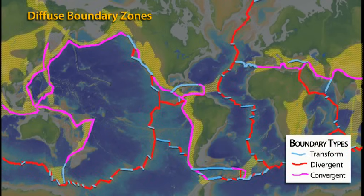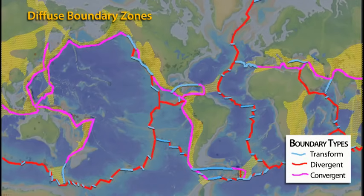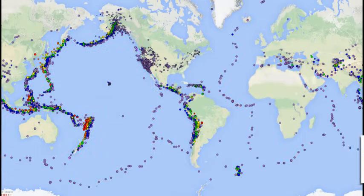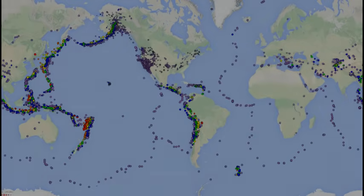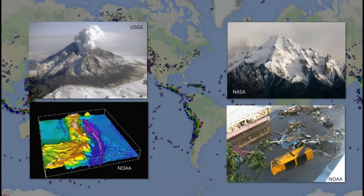In addition to these three boundaries, there are also diffuse boundary zones in which deformation occurs over a wide region. Although less common than earthquakes along plate boundaries, earthquakes in the interior part of plates, called intraplate earthquakes, do occur. Nevertheless, tectonic activity and earthquakes are chiefly concentrated at or near plate boundaries, where many geologic features including volcanoes, mountains, trenches, and tsunamis are in a constant state of change.